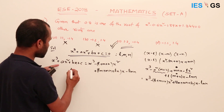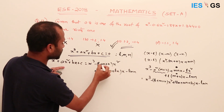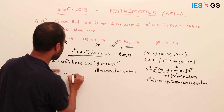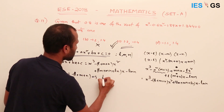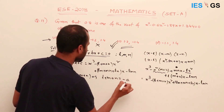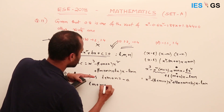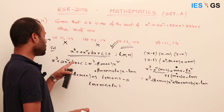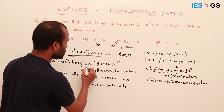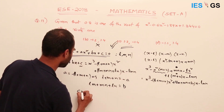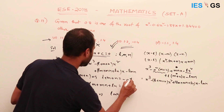Equating coefficients with x³ plus ax² plus bx plus c: the x² coefficient gives a equals minus(l+m+n), so l plus m plus n equals minus a. The x coefficient gives b equals lm plus mn plus ln. The constant gives c equals minus l·m·n, so l·m·n equals minus c. This is how those three Vieta's formulas are derived.